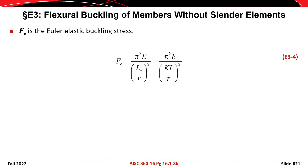F sub e is the Euler or elastic buckling stress — the 'e' stands for either. It's taken as pi squared times E divided by the quantity (kL over r) squared, i.e., the effective slenderness ratio squared.